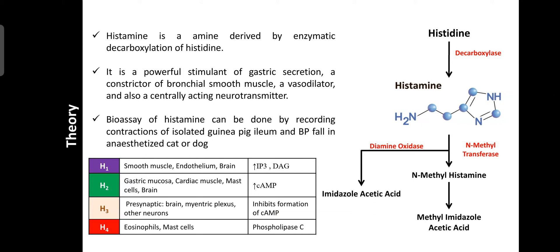Regarding mechanism, histamine mainly acts through receptors known as histamine receptors. These are classified into four types: H1, H2, H3, and H4. H1 receptors are found in smooth muscle, endothelium, and brain. When histamine binds to H1, it increases IP3 and DAG.